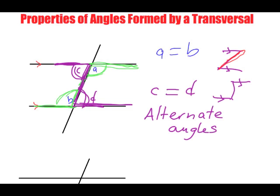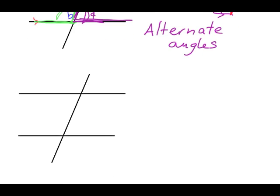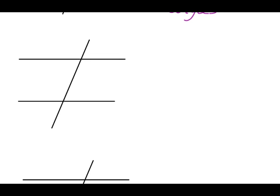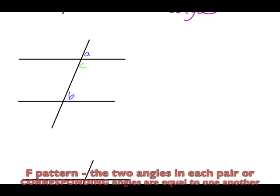Now let's look at another property. We've got the same setup, and we're going to label this angle as A and this one as B. Let's also label this as C and this as D. C is actually equal to D because these are what we call corresponding angles, and corresponding angles are equal to one another.